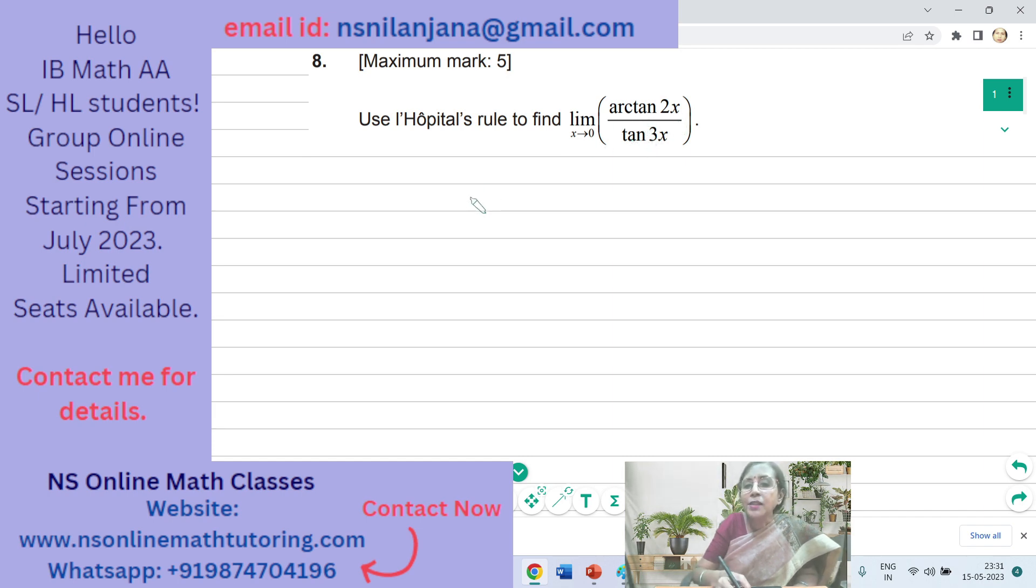What is arctan 2x when x tends to 0? Limit x tends to 0, arctan 2x is equal to 0. And limit x tends to 0, tan 3x, because arctan of 2 times 0 is 0. So what will be the angle of arctan of 0? It will be 0 degrees or 0 radians. And what is tan of 3 times 0? That is tan of 0. It is again 0. So it is a 0 by 0 case. Therefore, we have to use L'Hôpital's rule.